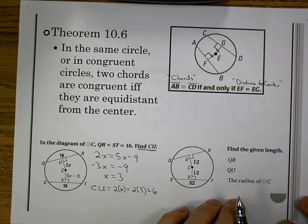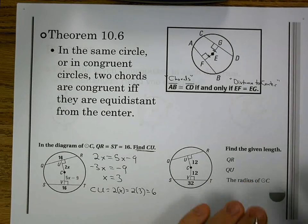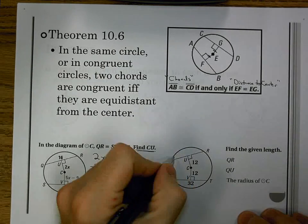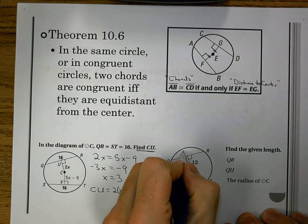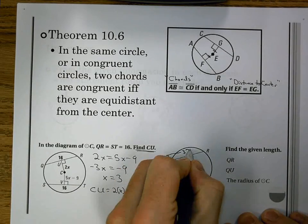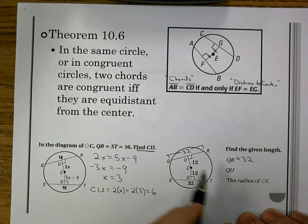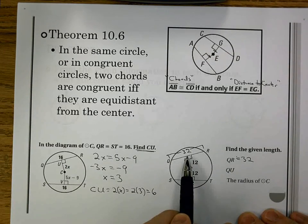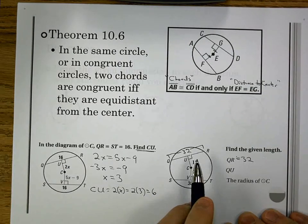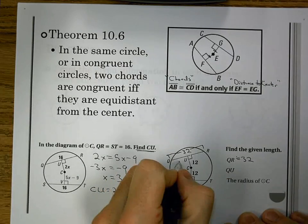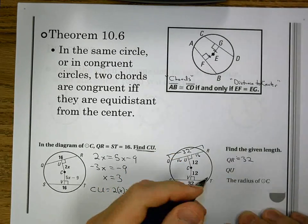This last problem here is the same idea, but it's going to go a little bit further, and this is one we need to be familiar with. First of all, we have they're equidistant from the center. So CU, CV, they're the same. That means when you first need to find QR, we know it's the same distance as ST. So this is 32. Then when I need to find QU, QU is actually half of the 32, because this line bisects the chords. So that would be 16, and this would be 16 if we needed it.